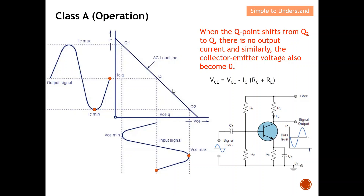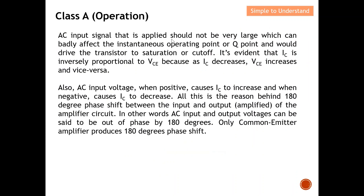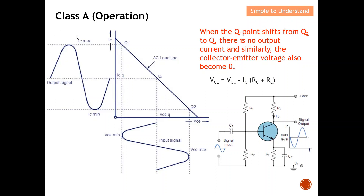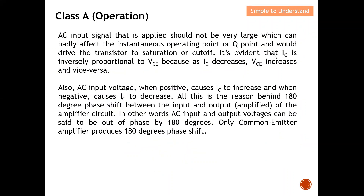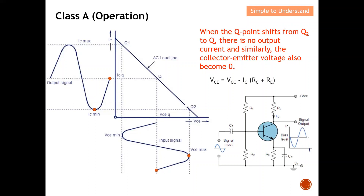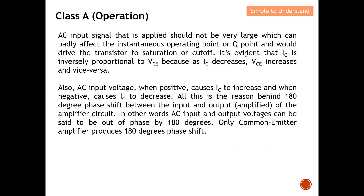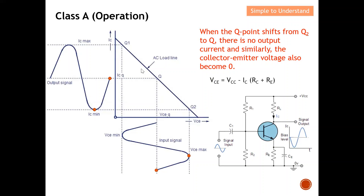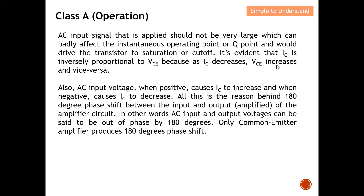To summarize: the AC input signal applied should not be very large. If it is too large, the transistor will be driven into saturation or cutoff, which badly affects the instantaneous operating point or Q point. It is very important to keep IC within the Q1 to Q2 zone and not exceed those boundaries. We also know that IC is inversely proportional to VCE, as seen from the equation — as IC increases, VCE decreases and vice versa.